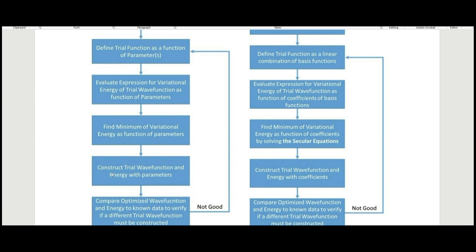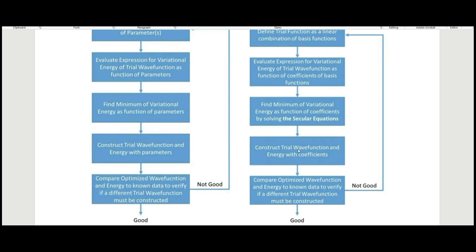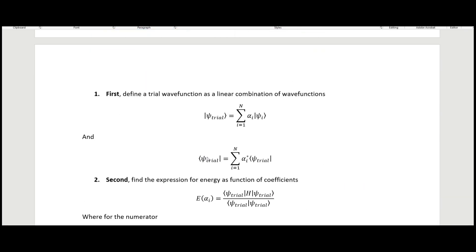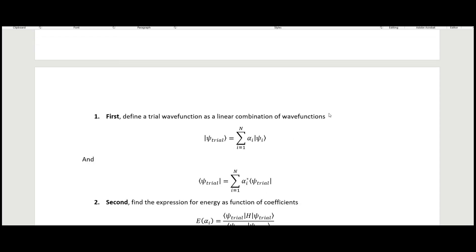Step four in the standard variational method is to construct trial wave functions by putting our parameters back into the energy expression and finding the energy. In the linear variational method we do the same thing but with the coefficients rather than adjustable parameters — otherwise it is essentially the same process. Now let's go through this abstractly first and then look at a concrete example. We define our trial wave functions as linear combinations, expressed as a ket vector and its corresponding bra vector.